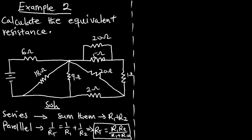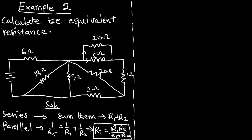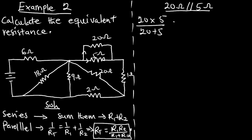Looking at the diagram, we can see that the 20-ohm resistor and the 5-ohm resistor are in a parallel connection, because the current flowing through one path is not the same as the other path. So the 20-ohm resistor is parallel to the 5-ohm resistor. Solving for that using our parallel expression: (20 × 5) / (20 + 5), which gives us 4 ohms.